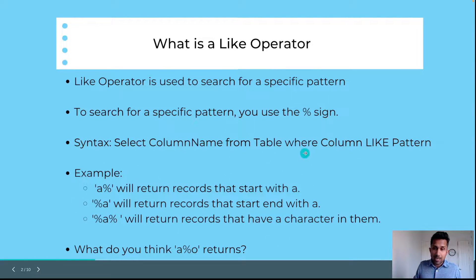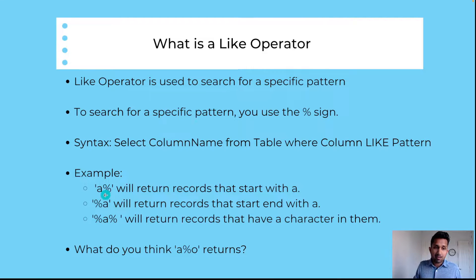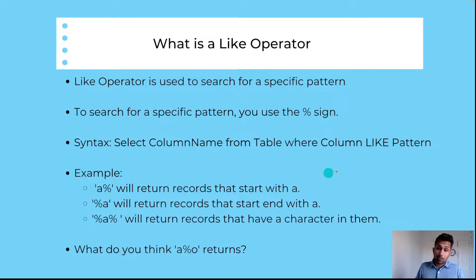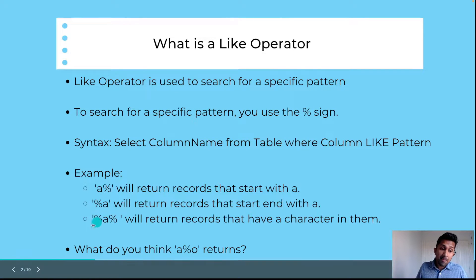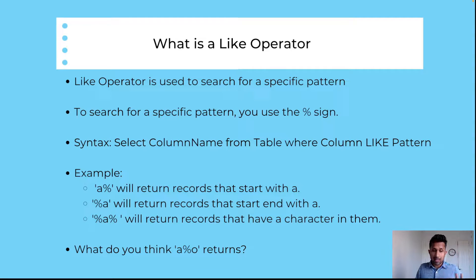If you say column LIKE 'a%' it will return records that start with A. If you say column LIKE '%a' it's going to give you a list of all records that end with A. If you specify '%a%' it's going to return a list of records that have the character A in them.